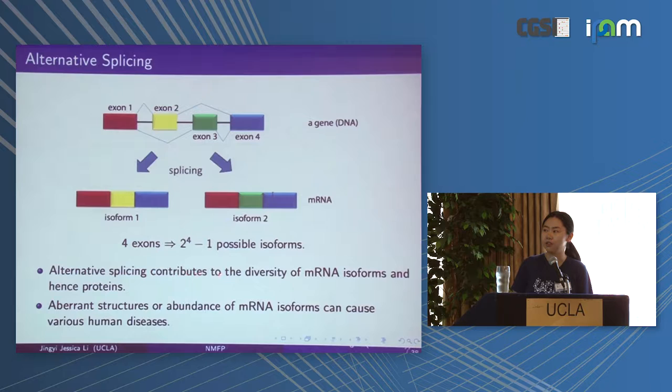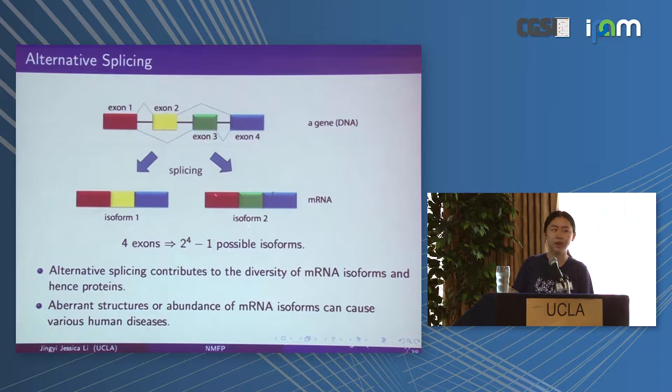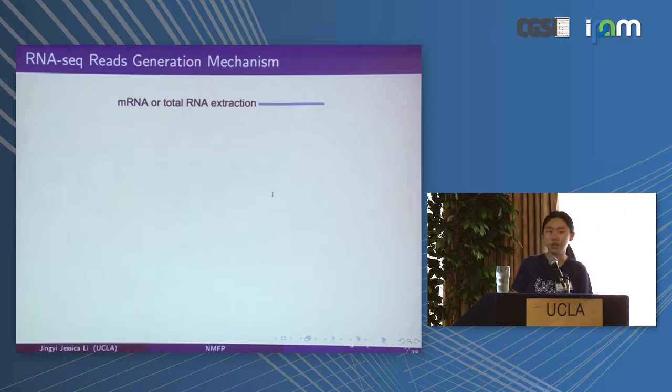Alternative splicing is an important step that contributes to the diversity of mRNA isoforms and hence proteins, since each isoform will be translated into a protein. Aberrant isoform structures — for example, a weird isoform in a cancer cell or dramatic changes in isoform expression in cancer — can be related to diseases, as the structure and abundance of isoforms can differ in cancer cells.